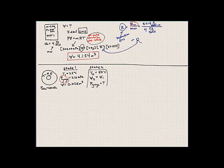Since we're dealing with a gas, we can use the ideal gas law: PV equals mRT. We know pressure at state one, volume at states one and two, and temperature in both cases. R is the same gas constant throughout. Since it's a closed system, mass at state one equals mass at state two.